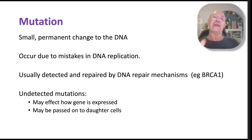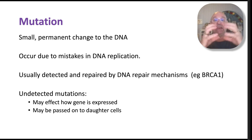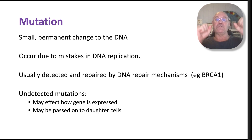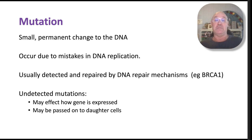Sometimes these mutations remain undetected and get passed on to the daughter cells — and that doesn't necessarily mean offspring. It means when a cell replicates, we have two daughter cells. DNA replication is semi-conservative, and the daughter cells continue to go through DNA replication and cell division, so those mutations persist within the organism. Of course, if a mutation occurs in the gametes or sex cells, it's going to be inherited by the offspring.